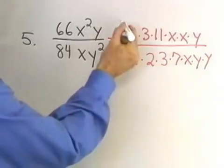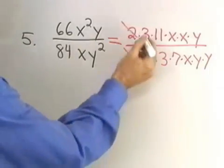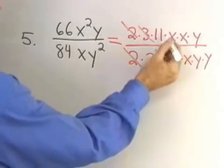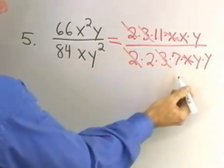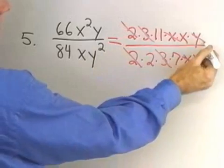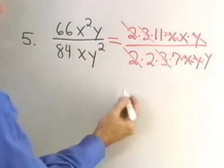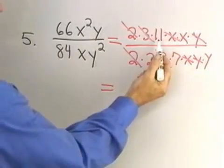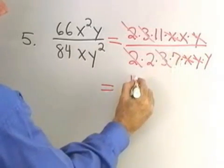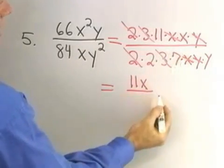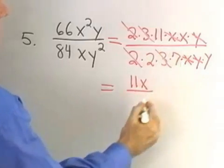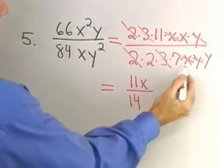Now, let's divide out common factors. The 2's divide out. The 3's divide out. That x will divide out with that x. There's no more x's in the denominator. That y will divide out with that y. In the numerator, I have left 11 times x, and in the denominator, I have 2 times 7, which is 14, times y. So, 11x over 14y.